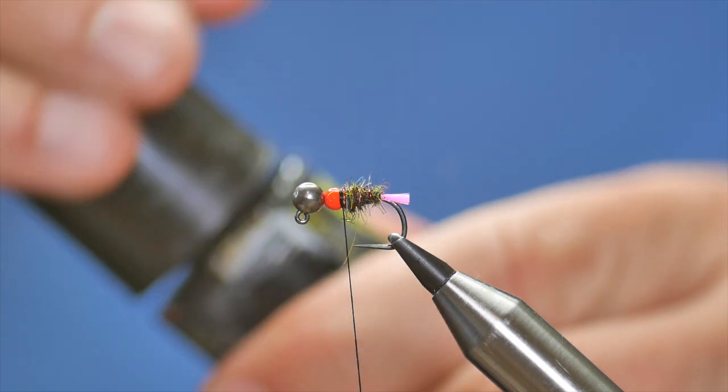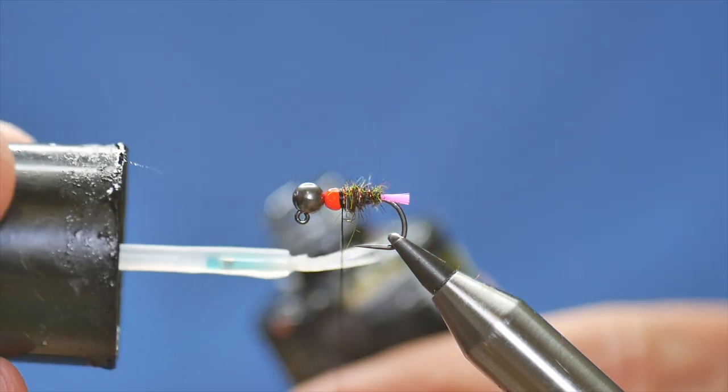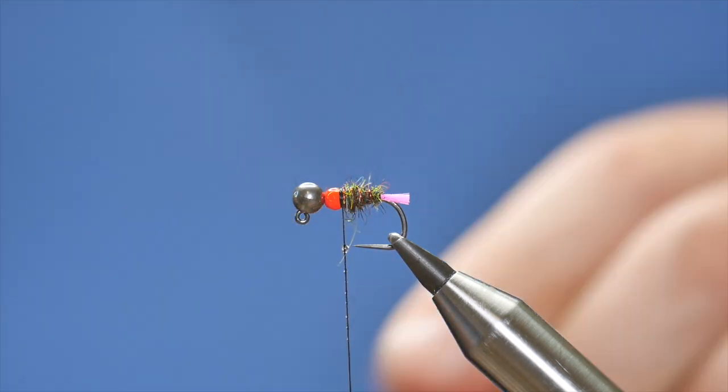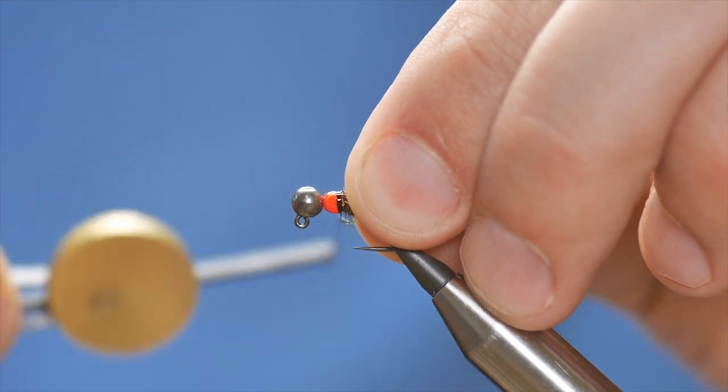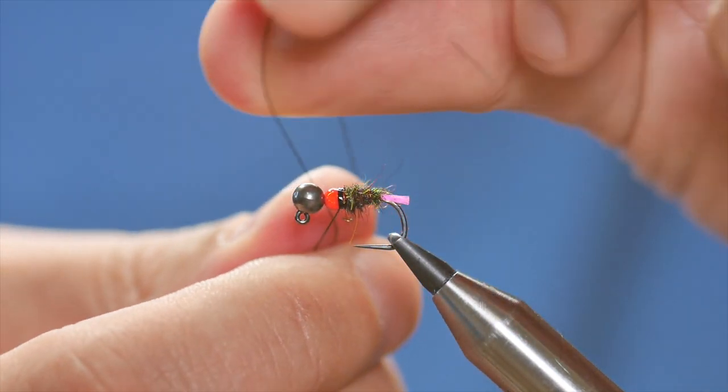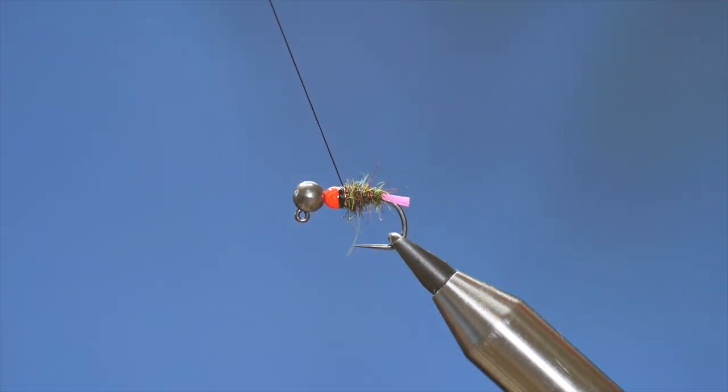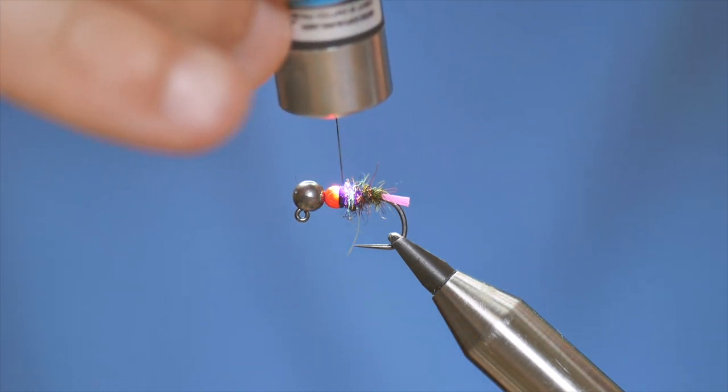To finish off this section of the fly, I'm going to add a small bit of UV resin. Get a couple of turns in here. Like so. Then, I can come in with my torch. Cure that off.